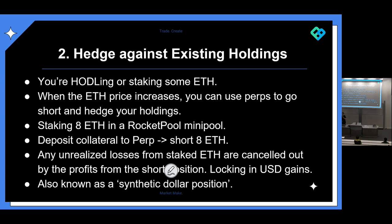The only downside of using perps this way is the funding rate. The funding rate keeps the price of the derivative contract in line with Chainlink oracle feeds. If the funding rate is consistently or deeply negative, short positions will incur fees which accrue to traders with long positions. If funding rates are positive, short positions will earn money on top of any profit from price movement.